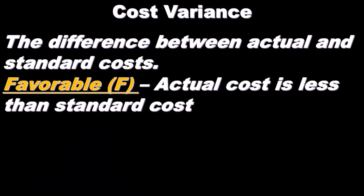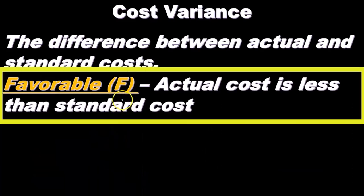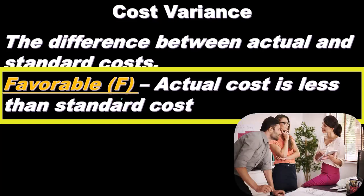A favorable difference will typically be indicated with a large F. A favorable difference is where the actual costs are less than the standard cost. That would make sense because if the actual cost is less than what we thought the cost should be, then in essence we've done better than we had expected in some way.